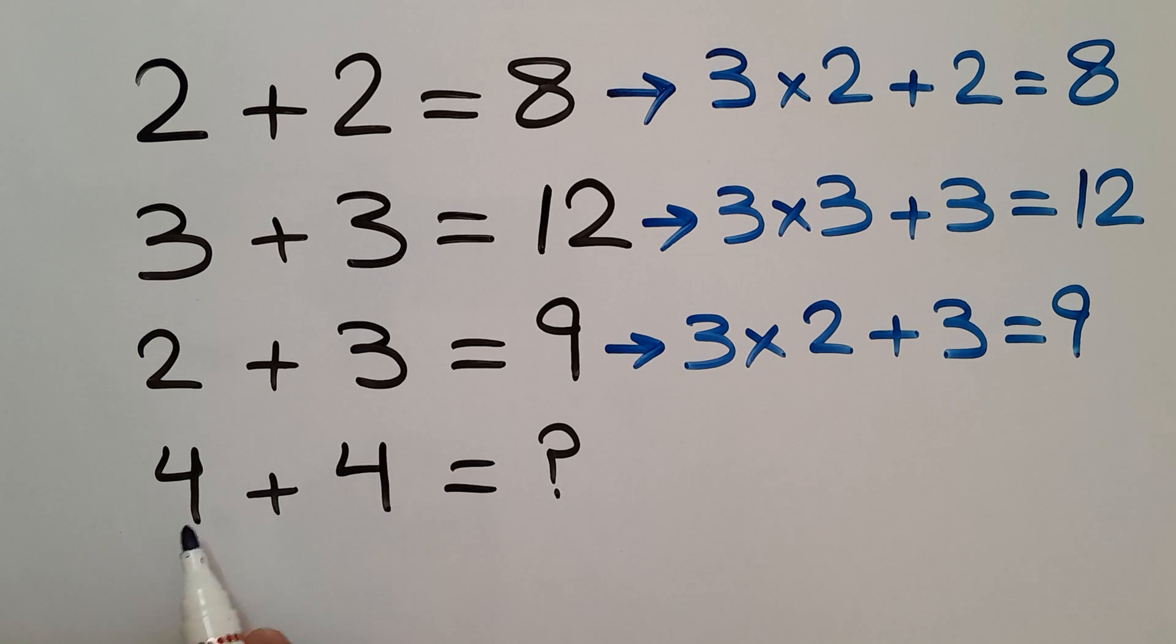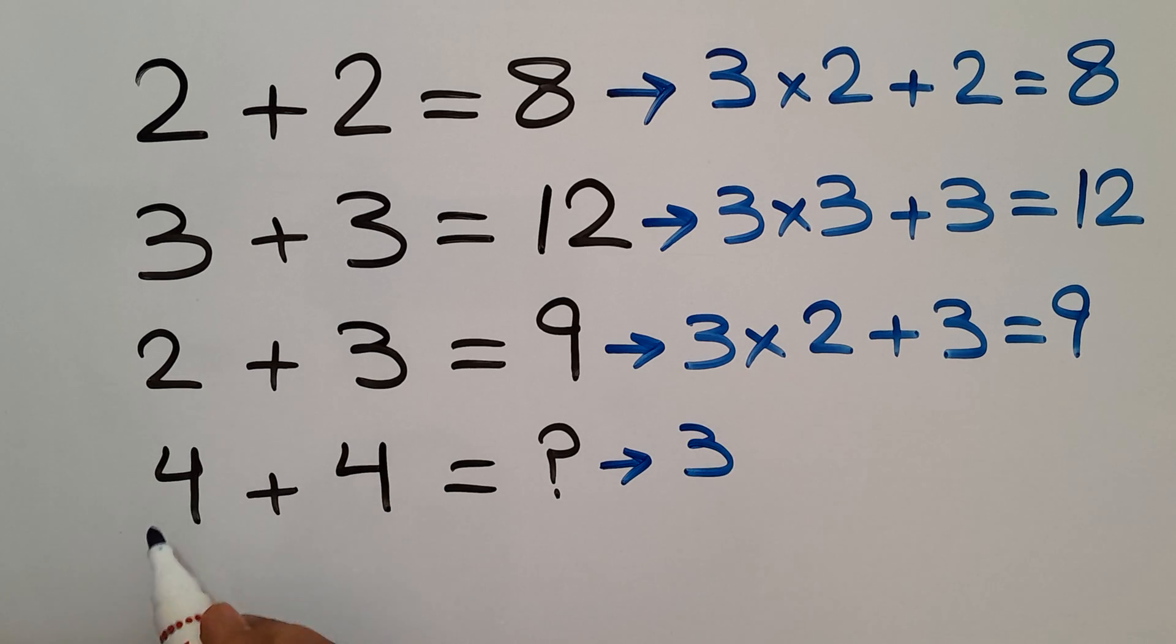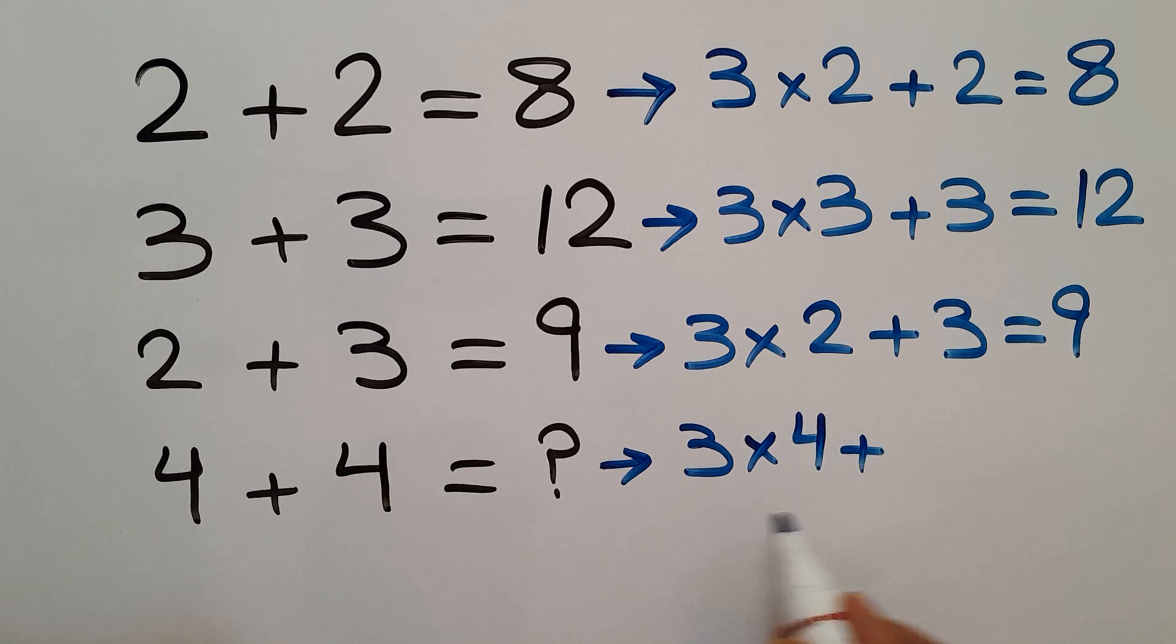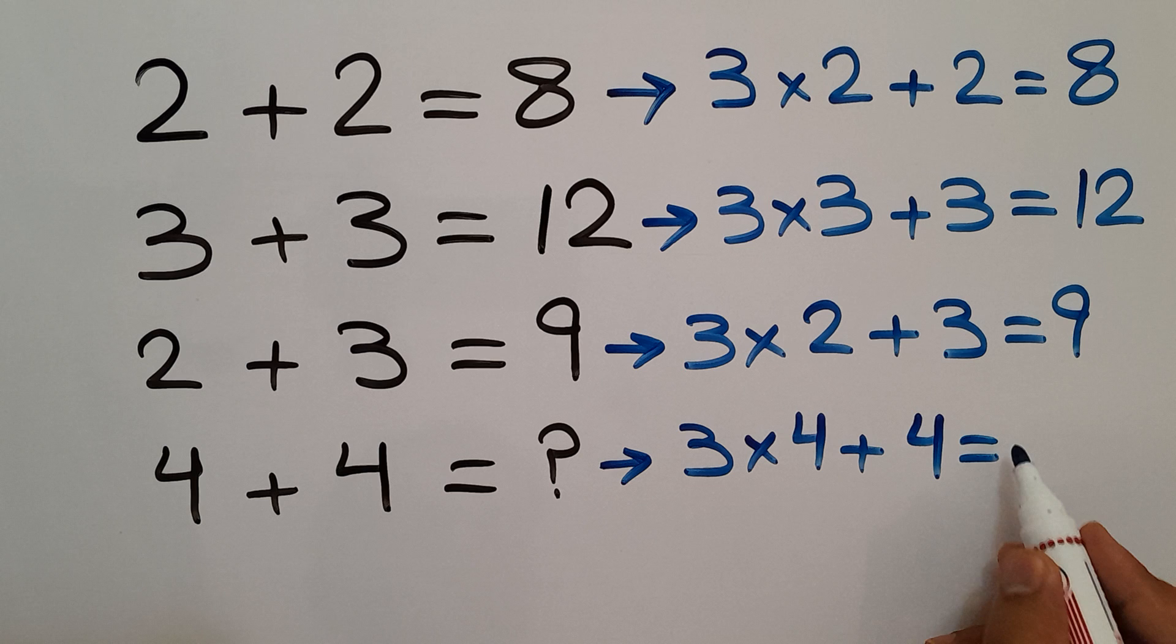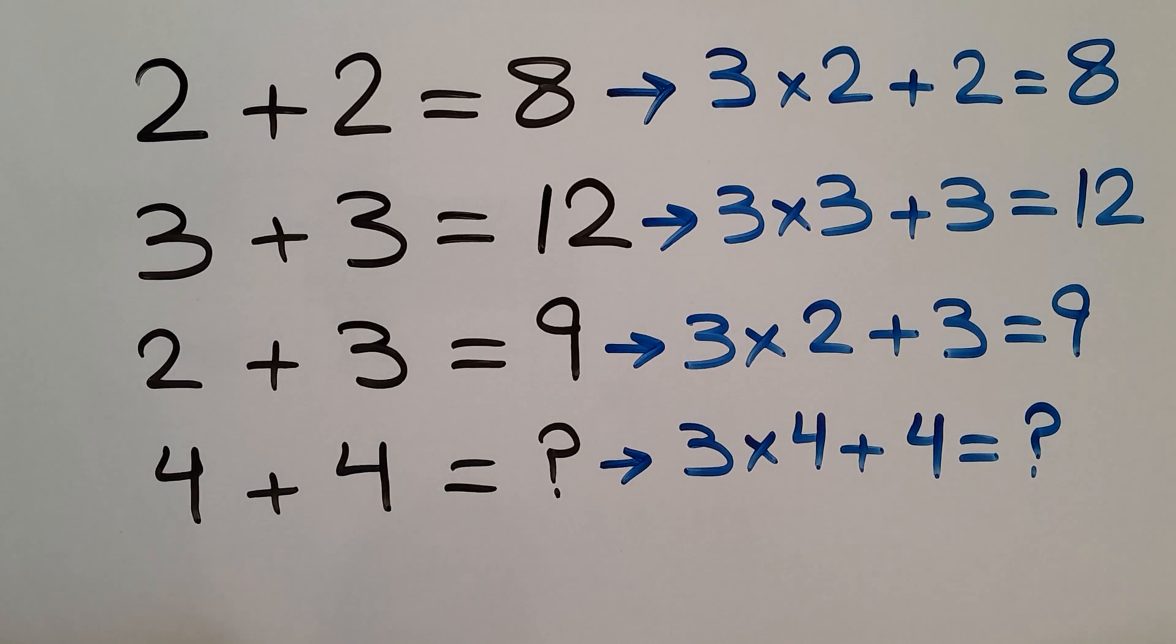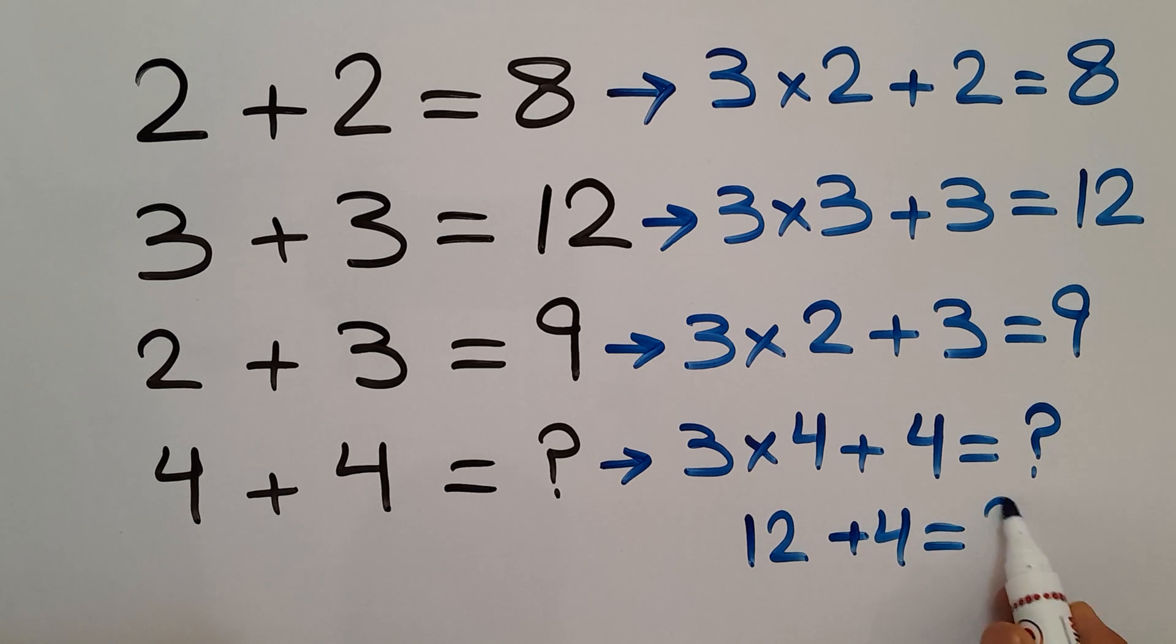In the fourth line we have 4, 4, and question mark. 3 times the first number, which is 4, plus the second number gives us the right hand side number. So therefore, 3 times 4 equals 12, and 12 plus 4 will equal question mark.